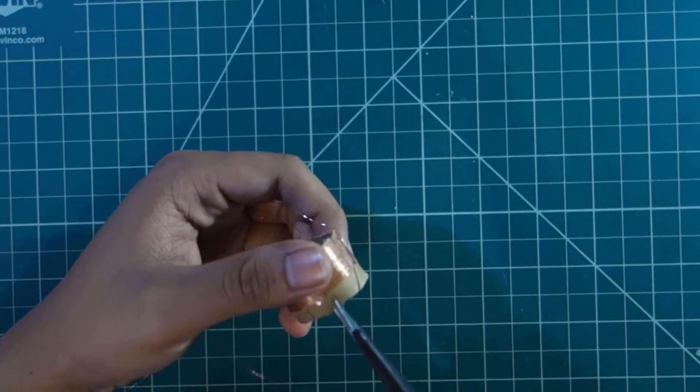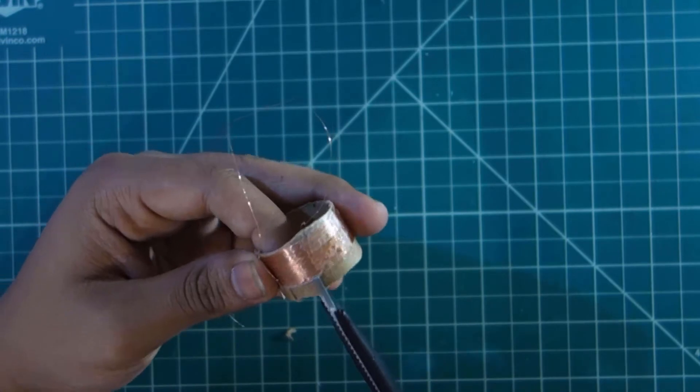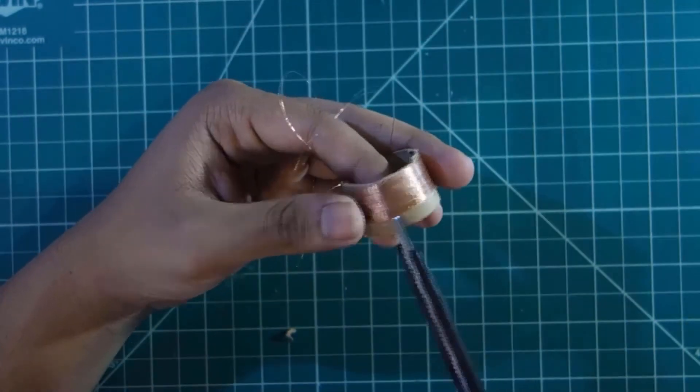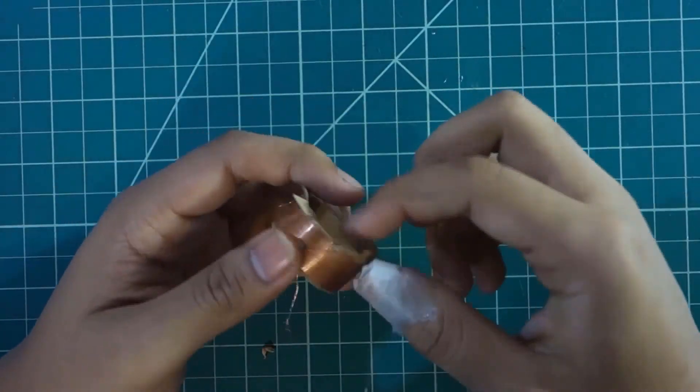If there is some extra space on the toilet tissue paper then cut it out. Now make slits all across the tube. Now push the slits outwards. This is going to be the moving coil of our microphone.